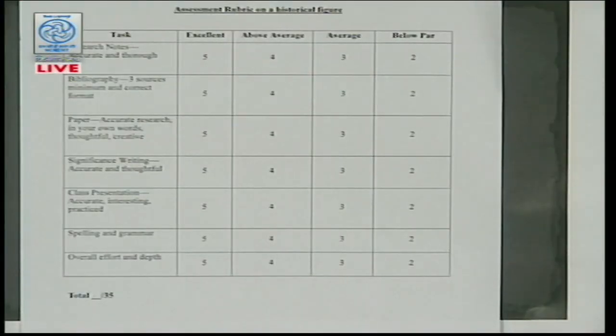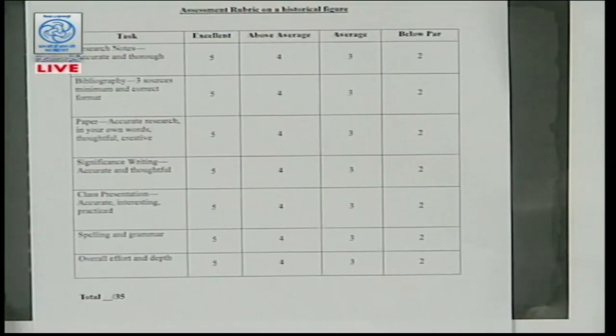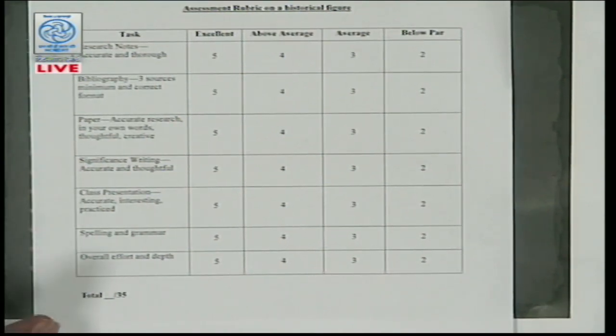Project activities, as you were talking about with CCE, can also be assessed. An assessment rubric can be prepared at the time of the second step when they are designing the whole project. When students are able to understand the different criteria of assessment for the project, it would be better for them to work and achieve more — they will have motivation to do better. For instance, if they are preparing research notes that are accurate and thorough, they will get more marks. There are different categories: excellent, above average, average, and below par.